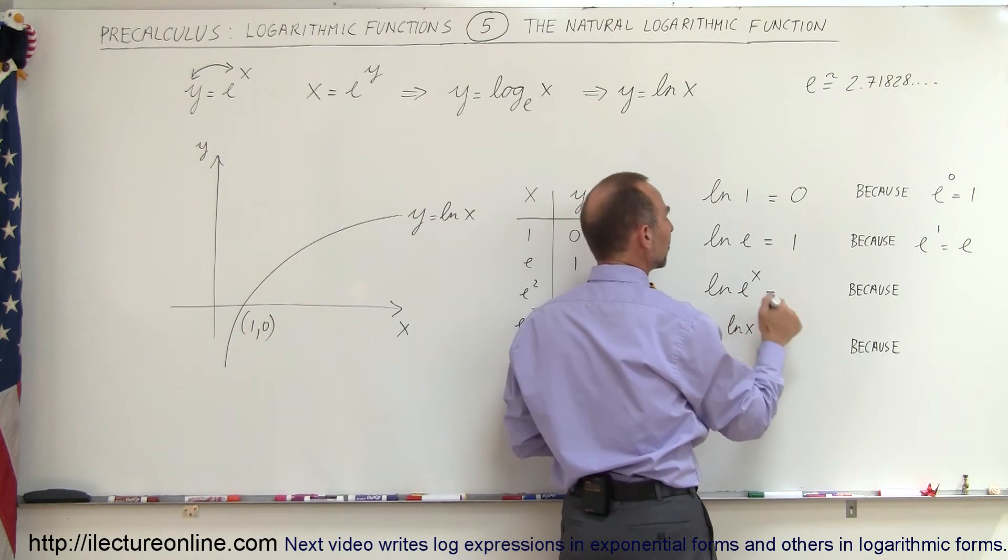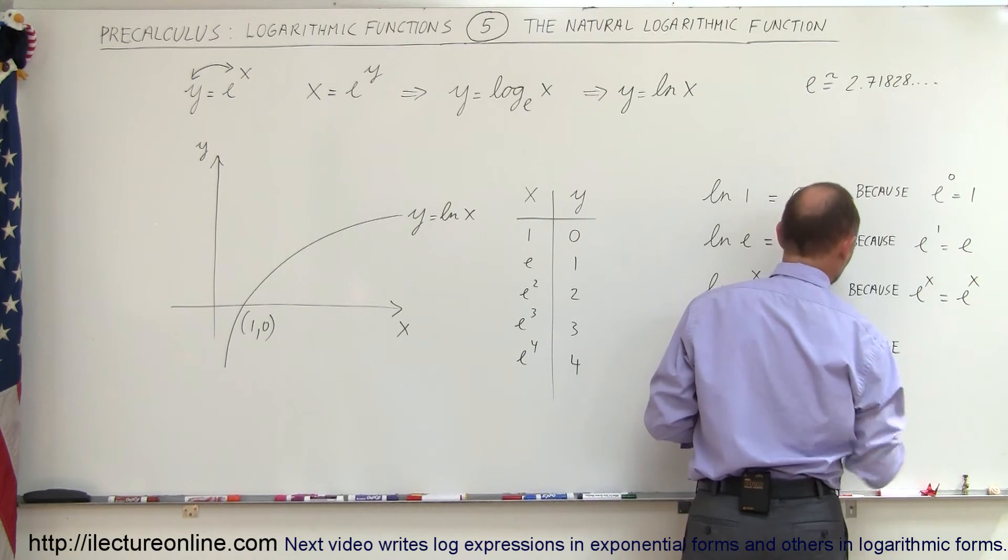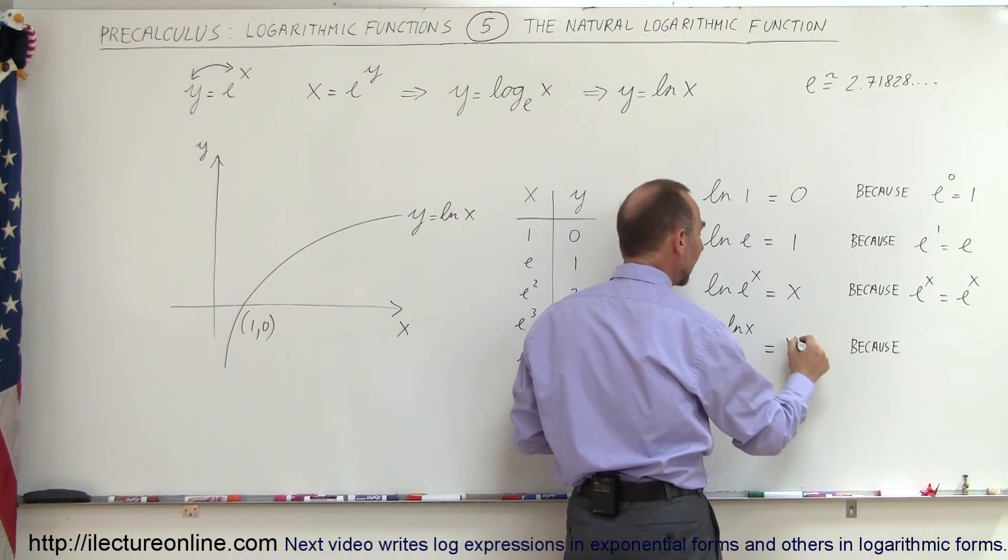The natural log of e to the x is equal to x because e to the x is equal to e to the x. And finally, e to the natural log of x is also equal to x, and now that's a little bit more tricky...